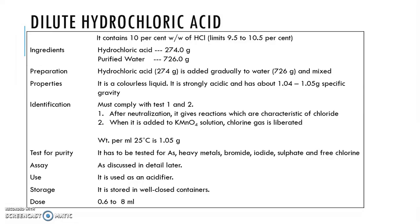To identify if it is true hydrochloric acid, it must comply with two tests: one is the neutralization test, and the second is that when hydrochloric acid is added to potassium permanganate solution, chlorine gas will be liberated.